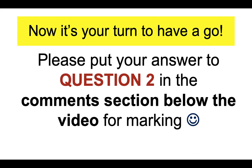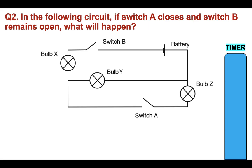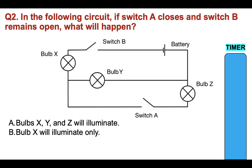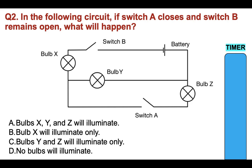Now it's your turn to have a go. Please put your answer to question two in the comments section below the video, and we will come on and mark these every day for you. There is a timer on the right hand side — once it gets down to the bottom, the time has run out. If you need more time, please don't be afraid to pause the video. Question two: in the following circuit, if switch A closes and switch B remains open, what will happen? A, bulbs X, Y and Z will illuminate; B, bulb X will illuminate only; C, bulbs Y and Z will illuminate only; or D, no bulbs will illuminate. Don't forget the location of the battery and the switches.